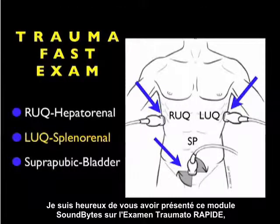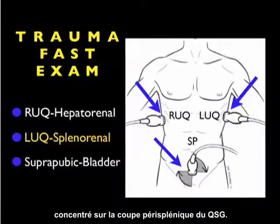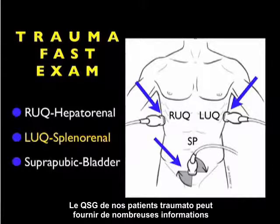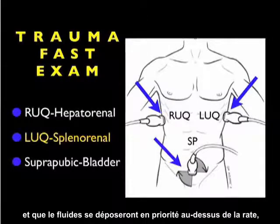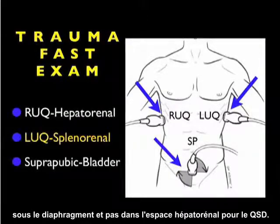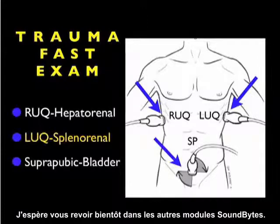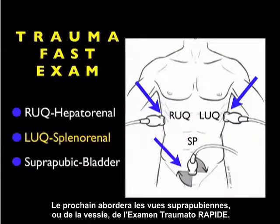In conclusion, in this Soundbites module we went over the trauma FAST exam — specifically the left upper quadrant or perisplenic view. There's a great deal of information gained by looking into the left upper quadrant in trauma patients, and it's important to realize that this is not a mirror view of the right upper quadrant — fluid will preferentially layer out above the spleen and below the diaphragm, in contrast to the hepatorenal space on the right. I hope to see you back as Soundbites continues with the suprapubic or bladder view of the trauma FAST exam.